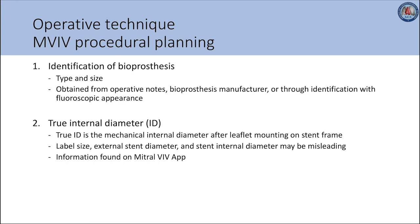Identifying the previously implanted bioprosthesis is a very critical step in procedural planning, as the type and size should be clearly identified whenever possible. Although the valve may not have an entirely unique fluoroscopic appearance, details can be easily confirmed from the operative notes or information from the valve manufacturer. The valve type and size determines the true internal diameter, or true ID, which is the mechanical internal diameter after leaflet mounting on the stent frame. It is important to note that label size, external stent diameter, and internal diameter may be misleading if used to select the right transcatheter heart valve size.